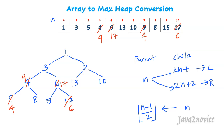Let's move to the next node. 5 is the node at index 2. 5 is the smallest compared to its children; 13 is the highest, so let's swap: 13 goes up and 5 goes down. We apply this in the array as well. Since 5 is now a leaf node, we cannot proceed further.